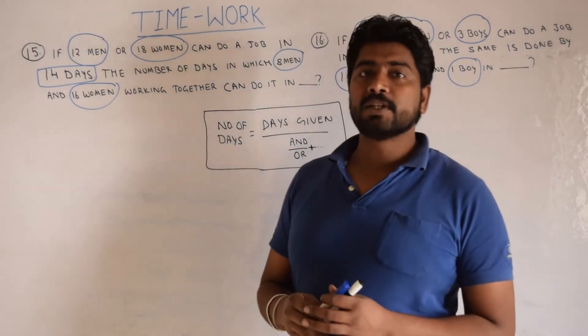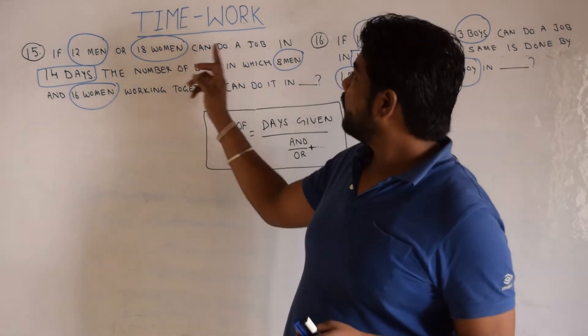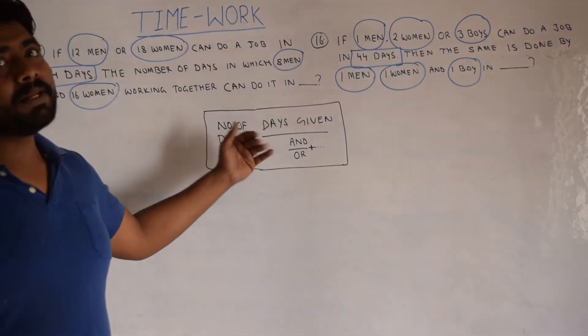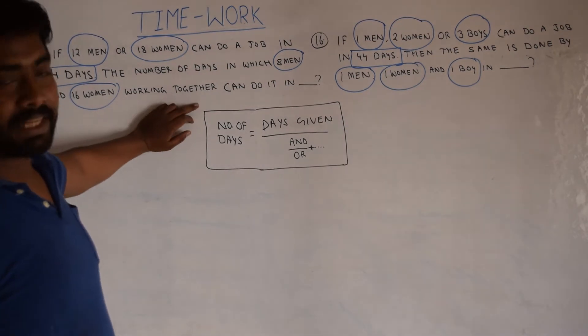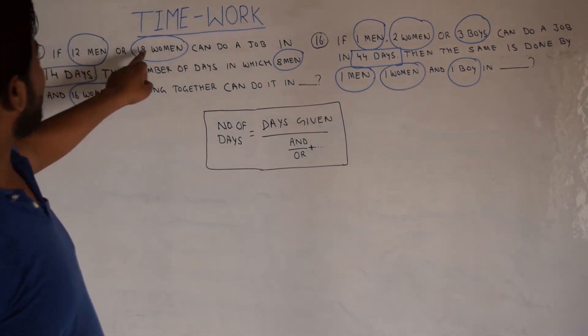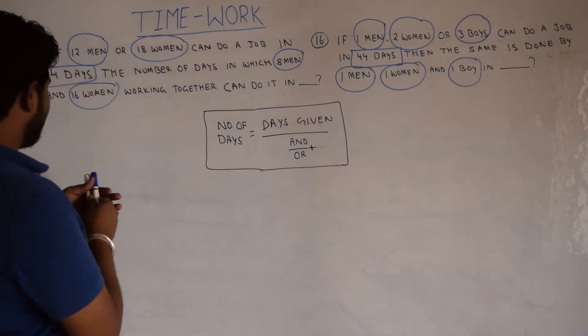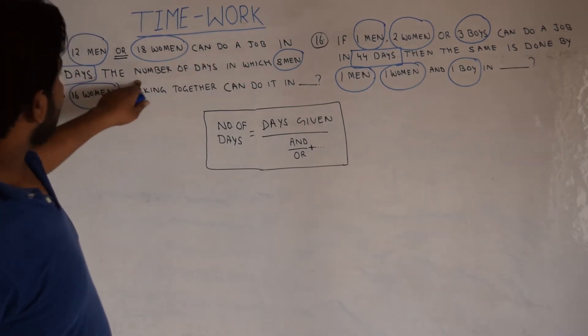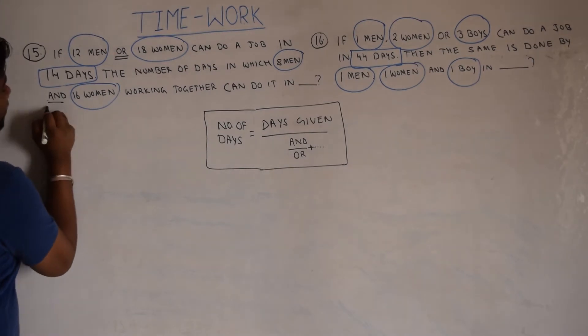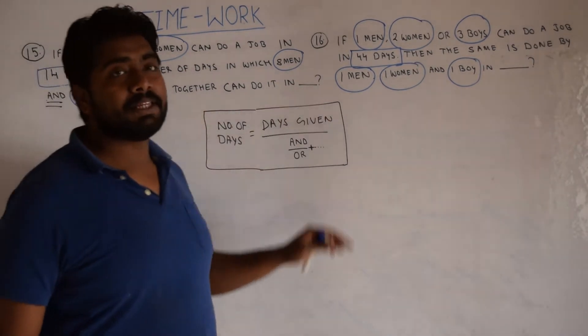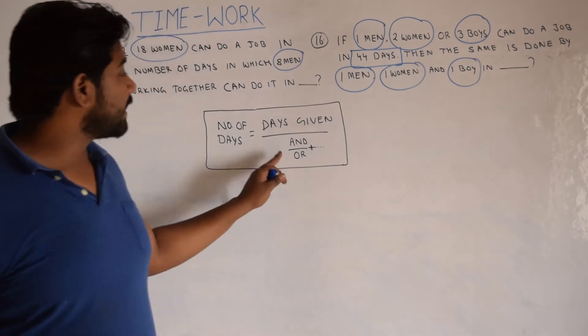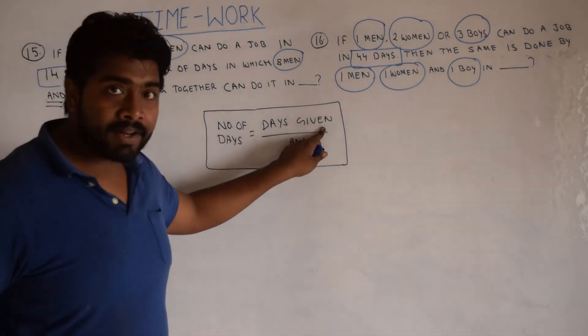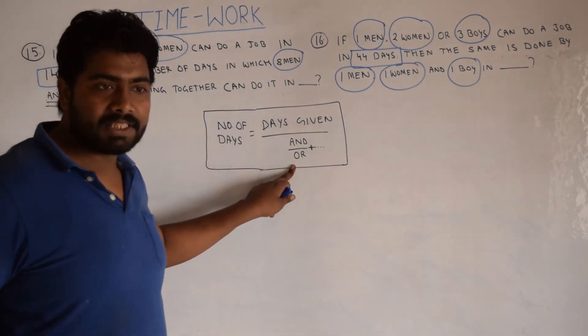Another type of question in time and work is the combination of AND and OR. AND and OR, the combination of each type of question. And for this, I have designed a formula and I will be simply using this formula to find the number of days. The question says 12 men OR 18 women, notable point this is your OR, can do a job in 14 days. Number of days in which 8 men AND 16 women working together can complete it. How many days? Now let's see how to use this formula. Number of days is equal to days given divided by AND upon OR.